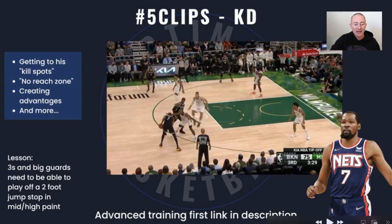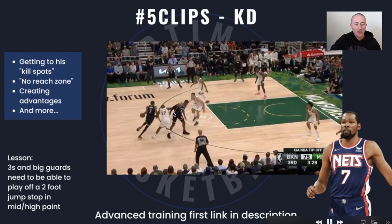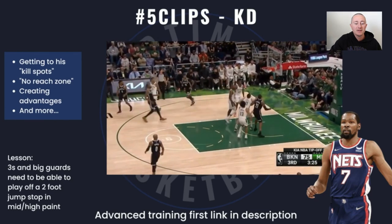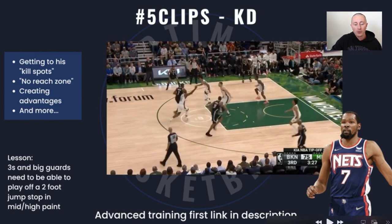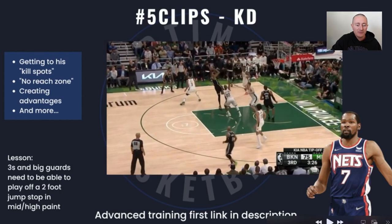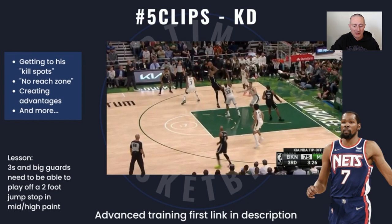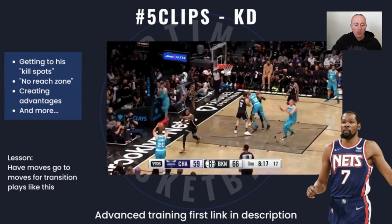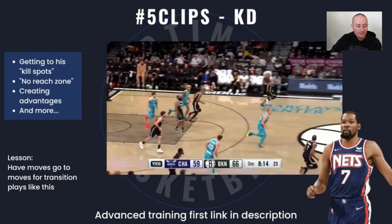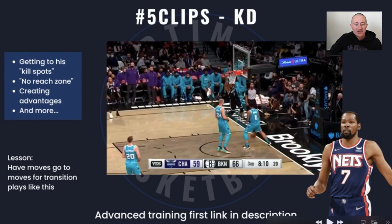What great offensive players do — and what KD does right here — is he gets on two feet, gets under control, and hits that slight fadeaway. Now KD is 6'11" with a high release point, but even if you're 6'3", 6'5", 6'6" and have a height advantage, this is still a shot you can hit. Playing off two feet in the paint is a very important skill, especially with jump stops.